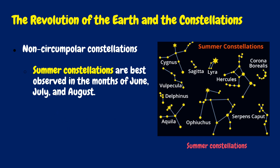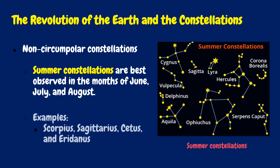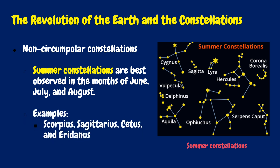Summer constellations are best observed in the months of June, July, and August. Examples are Scorpius, Sagittarius, Cetus, and Eridanus.